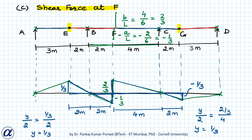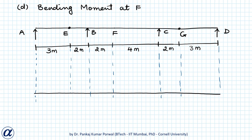This is the influence line diagram for shear force at F with magnitudes at all key points. Next, we want to draw the influence line diagram for bending moment at F. To do that we introduce an internal hinge at F and displace F vertically by magnitude AB/L, where A is 2 meters, B is 4 meters and L is 6 meters, giving a total vertical displacement of 4/3 units.